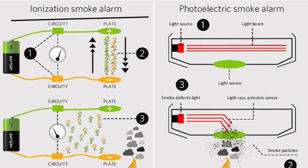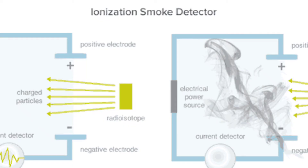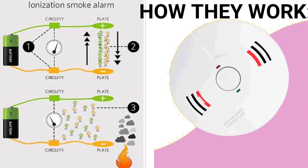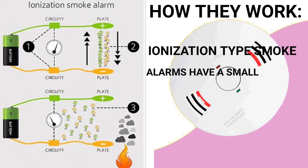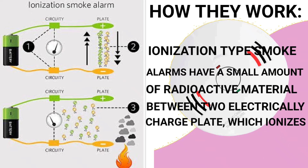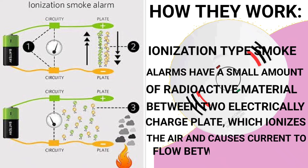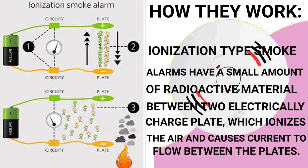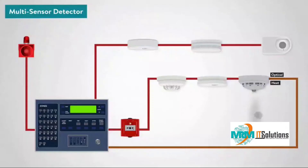Two types of fire alarm: Generally, there are two types of home smoke alarm — the most commonly recognized smoke detection technologies. Ionization smoke alarms are generally more responsive to flaming fires. Ionization-type smoke alarms have a small amount of radioactive material between two electrically charged plates, which ionize the air and cause current to flow between the plates. When smoke enters the chamber, it disrupts the flow of ions, thus reducing the flow of current and activating the alarm.